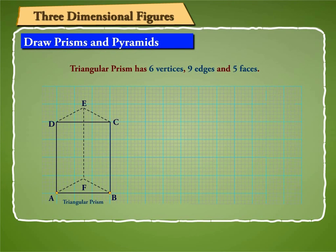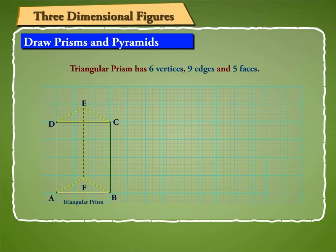A, B, C, D, E and F are its vertices. AB, AD, AF, BF, BC, EF, CE, CD and DE are its edges.